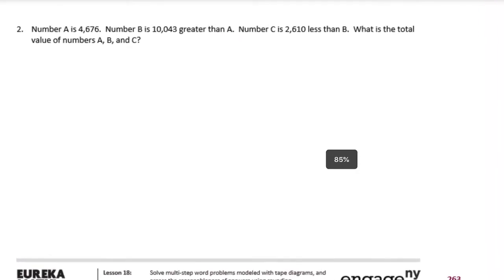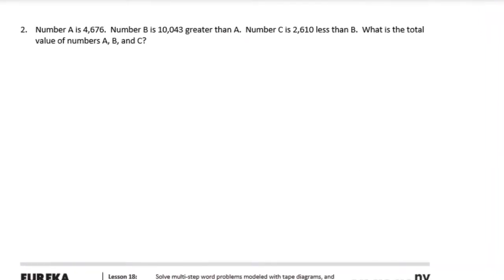Number 2. Number A is 4,676, number B is 10,043 greater than A, number C is 2,610 less than B. What's the total value of numbers A, B, and C?